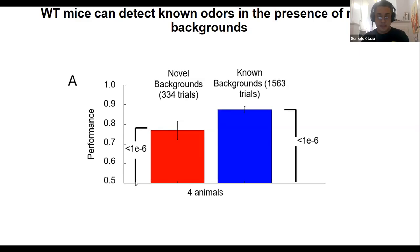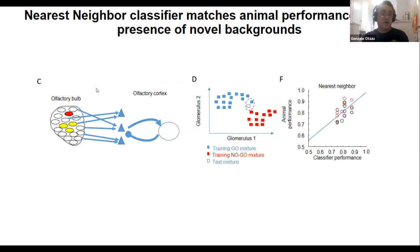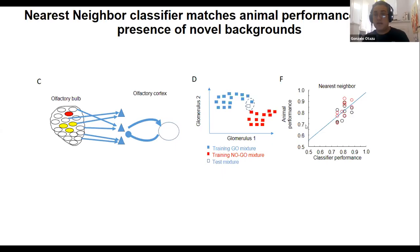We found that a simple nearest-neighbor algorithm using glomerular imaging data can match the animal's performance well — each dot corresponds to performance on a novel background odor. This nearest-neighbor algorithm can be implemented using circuitry in the olfactory system: given a novel mixture, find the best match; if it's a go match, then lick.